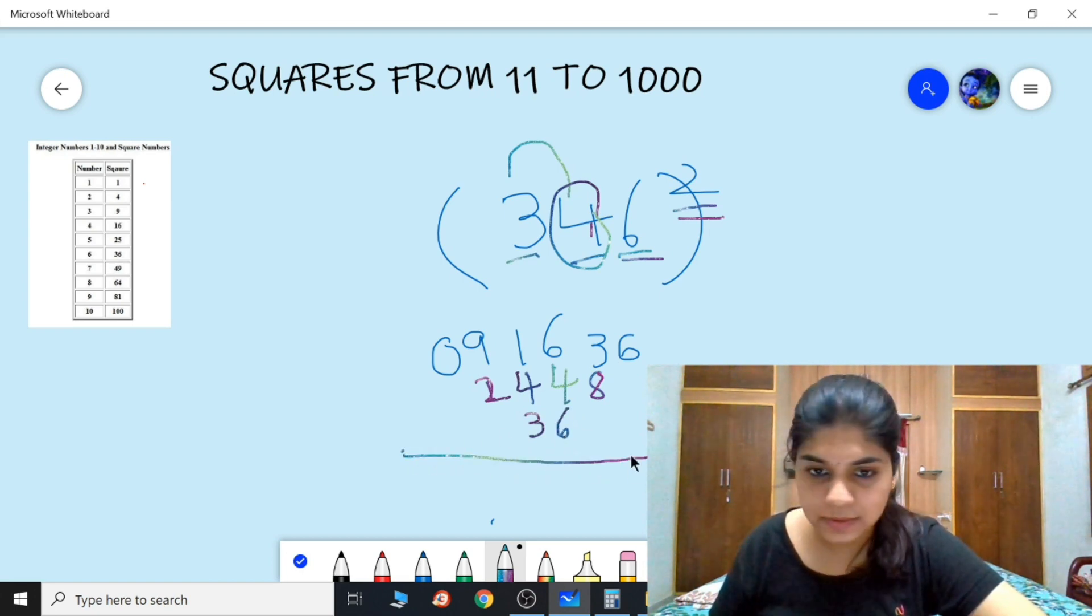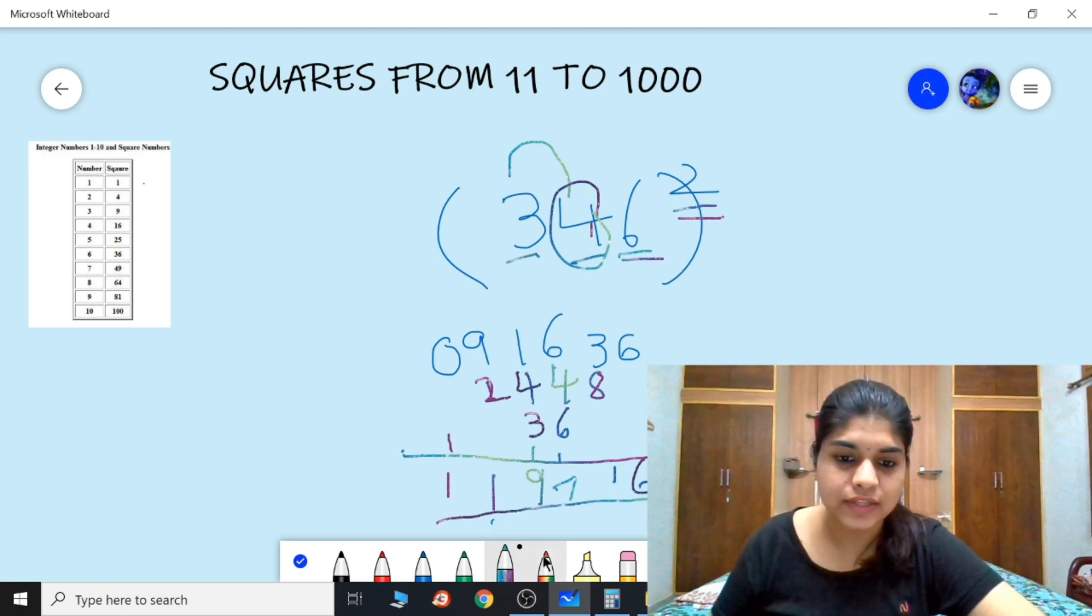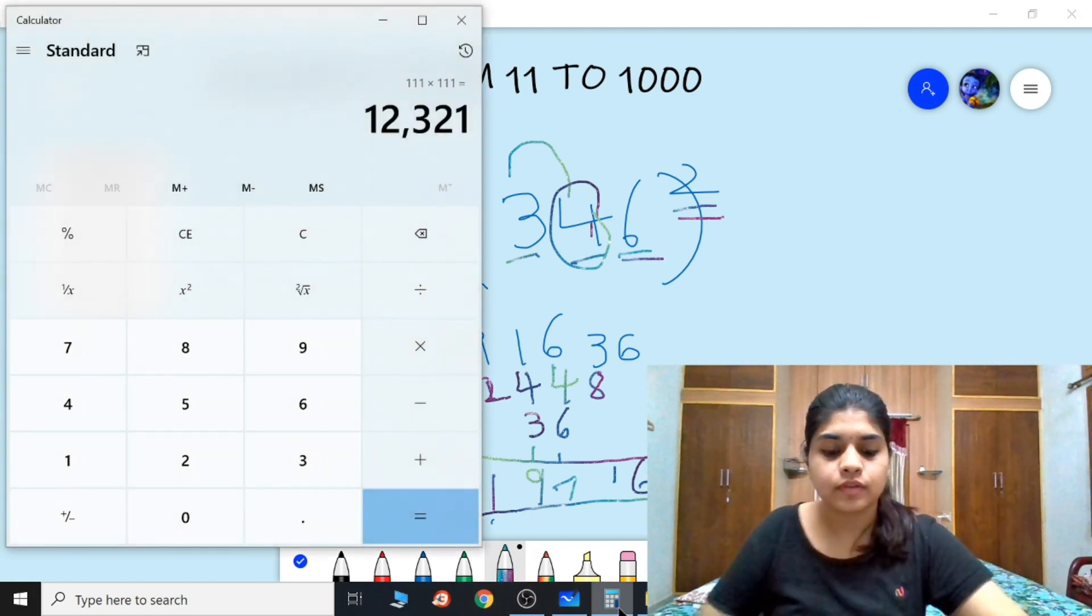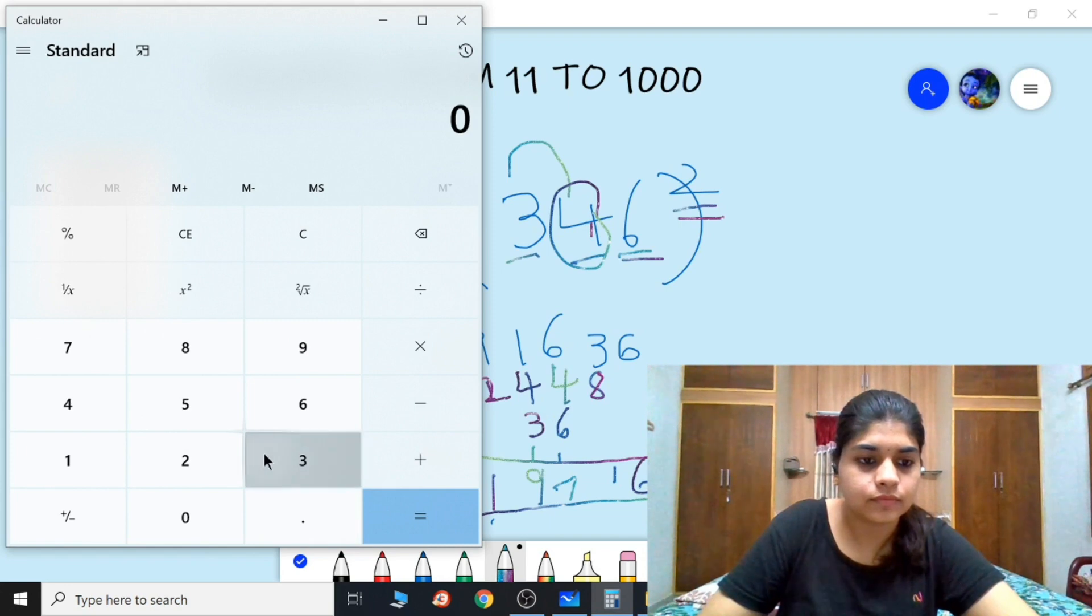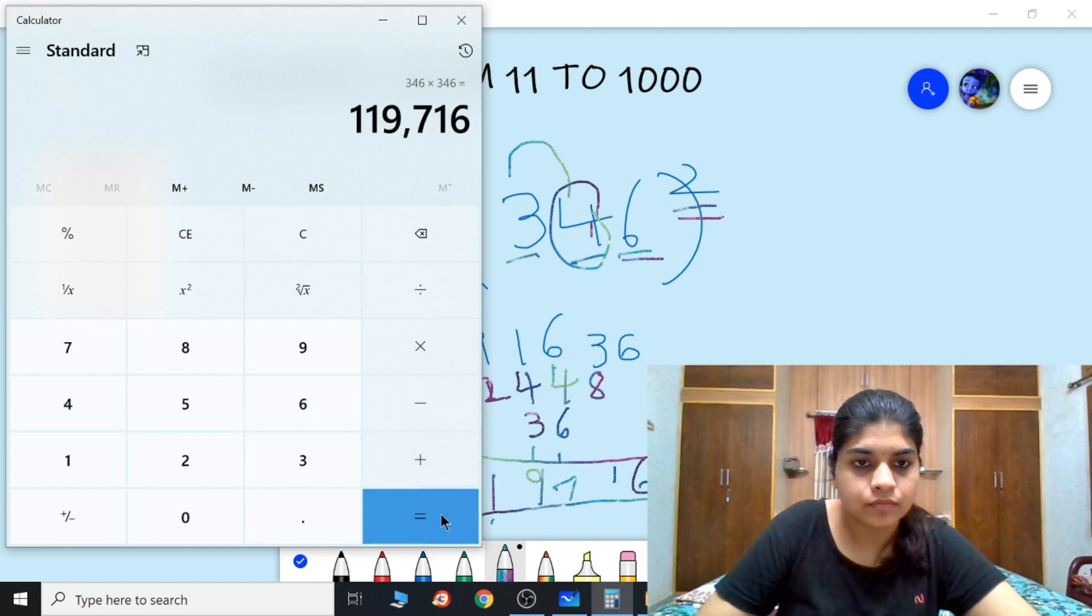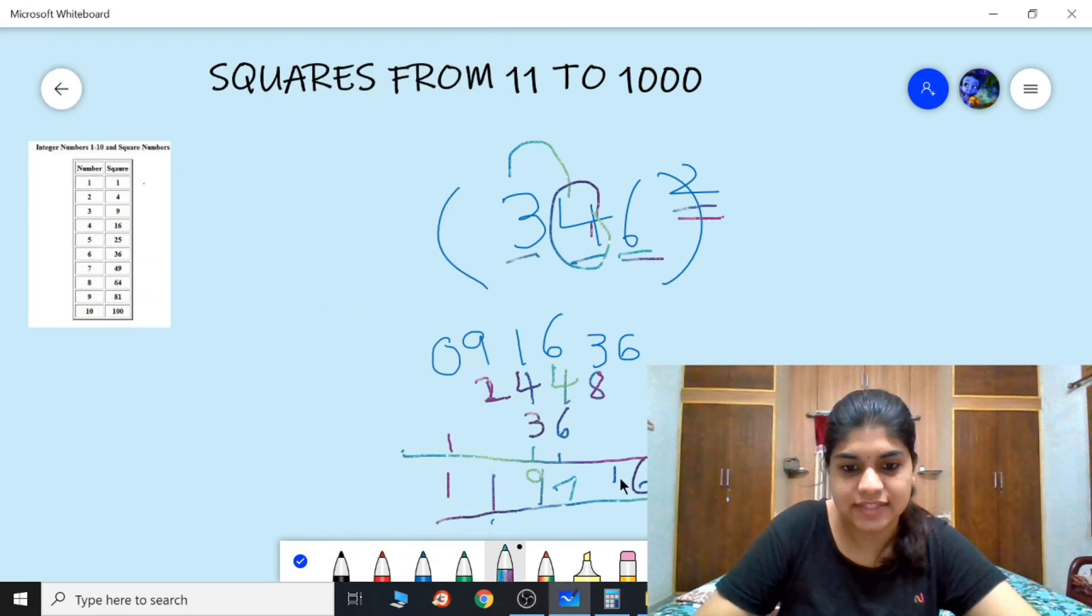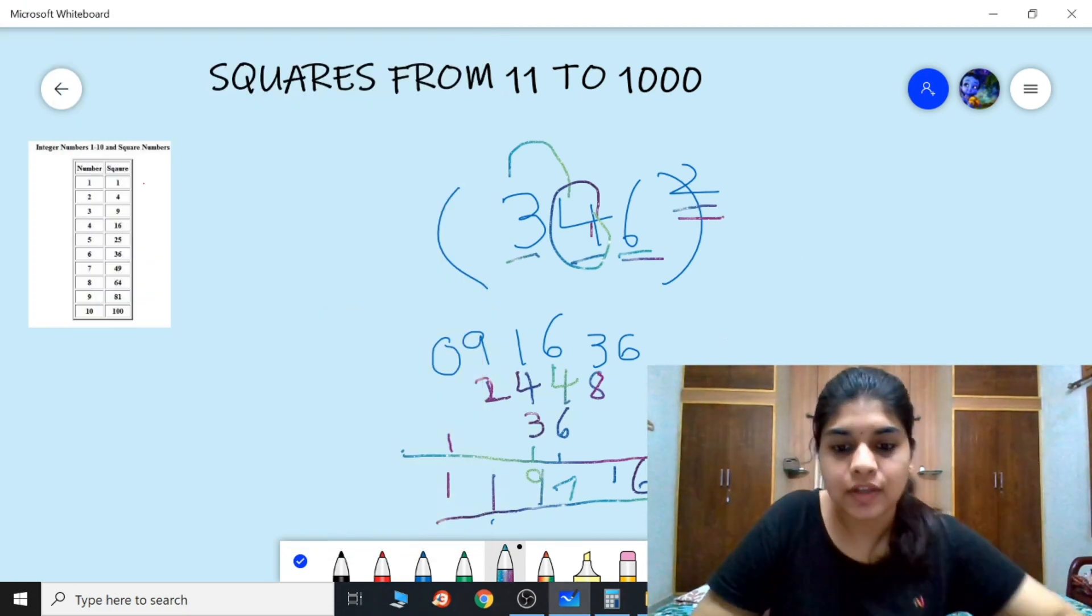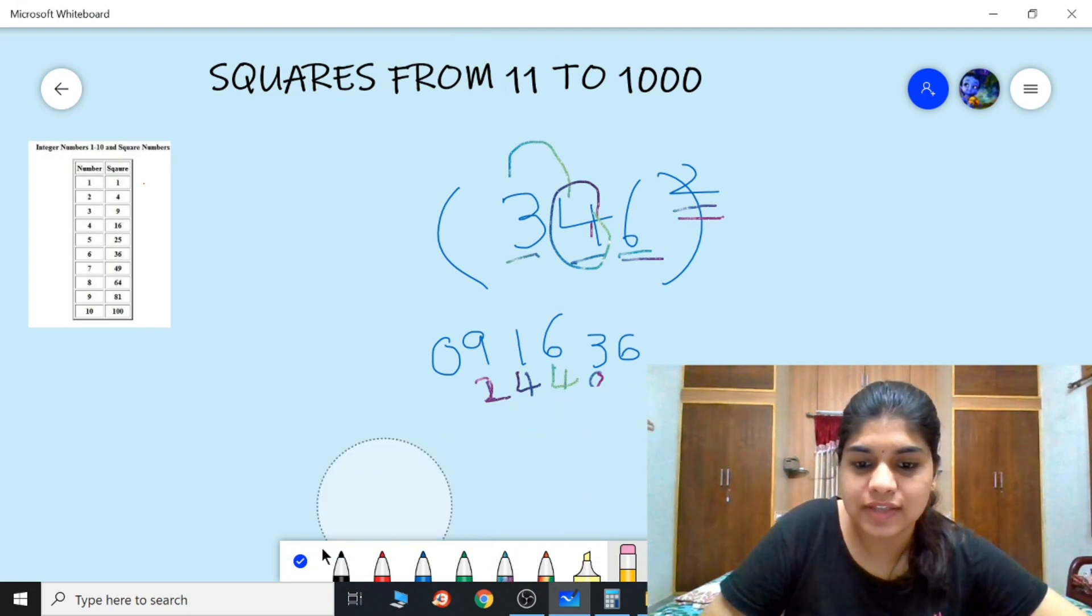We need to add all these: 6, 11, 17. So 7 and 2 is 9, 11, so it's 119716. Let's check with the calculator. 346 into 346 is 119716. Yes, so this is the method.